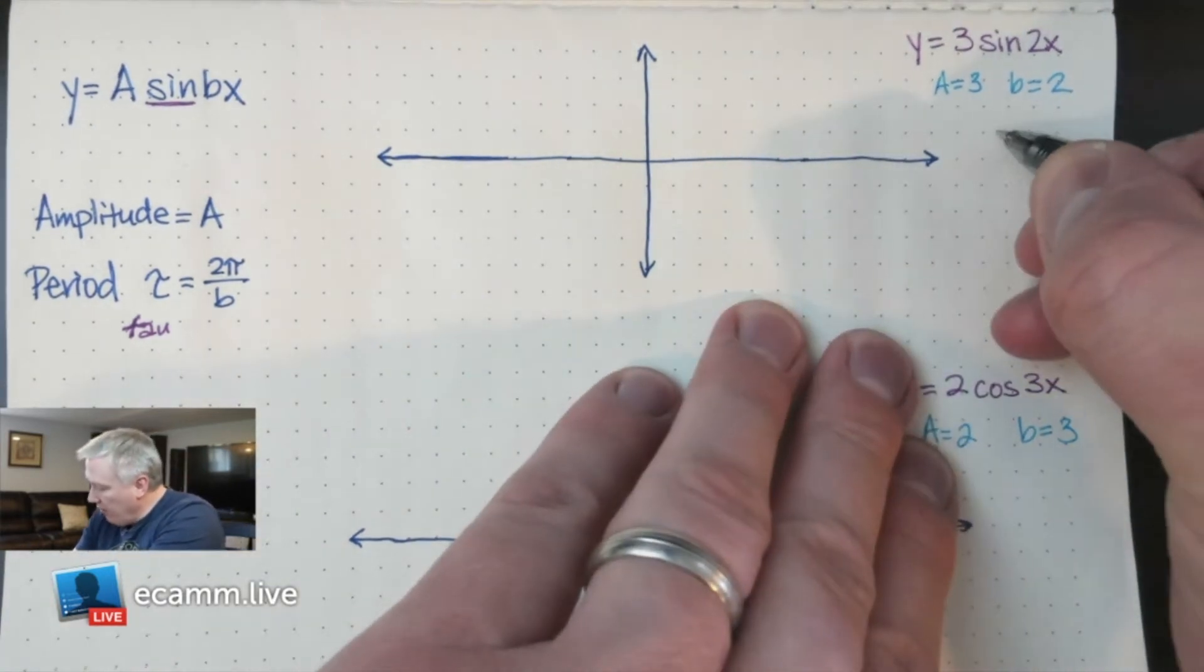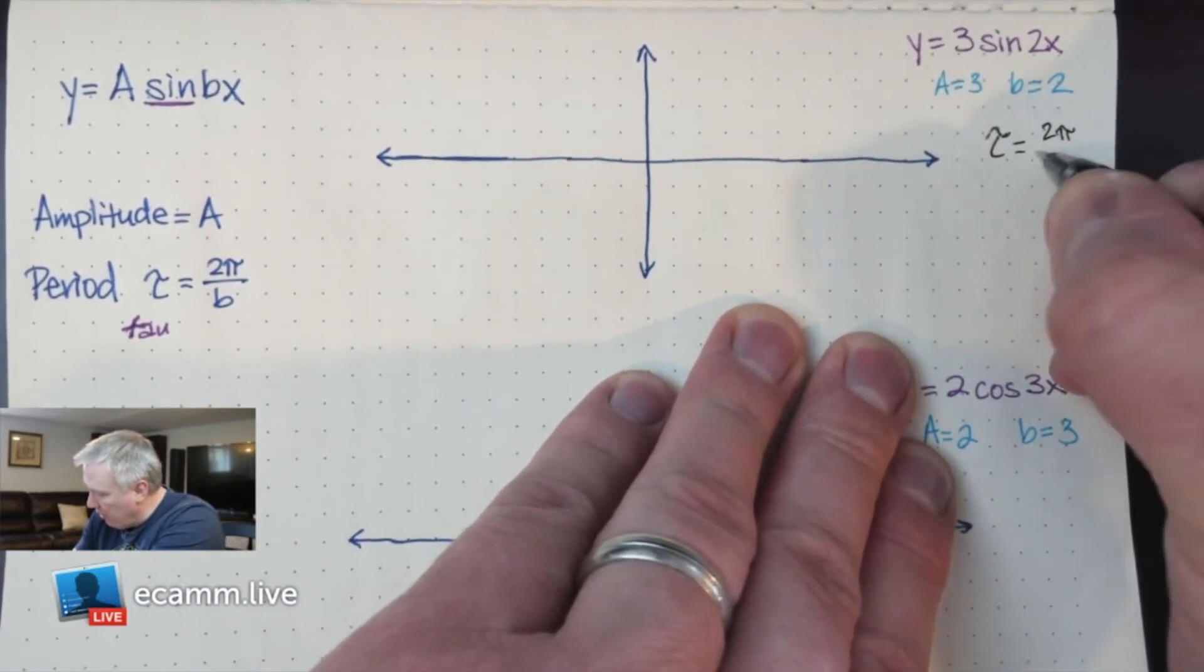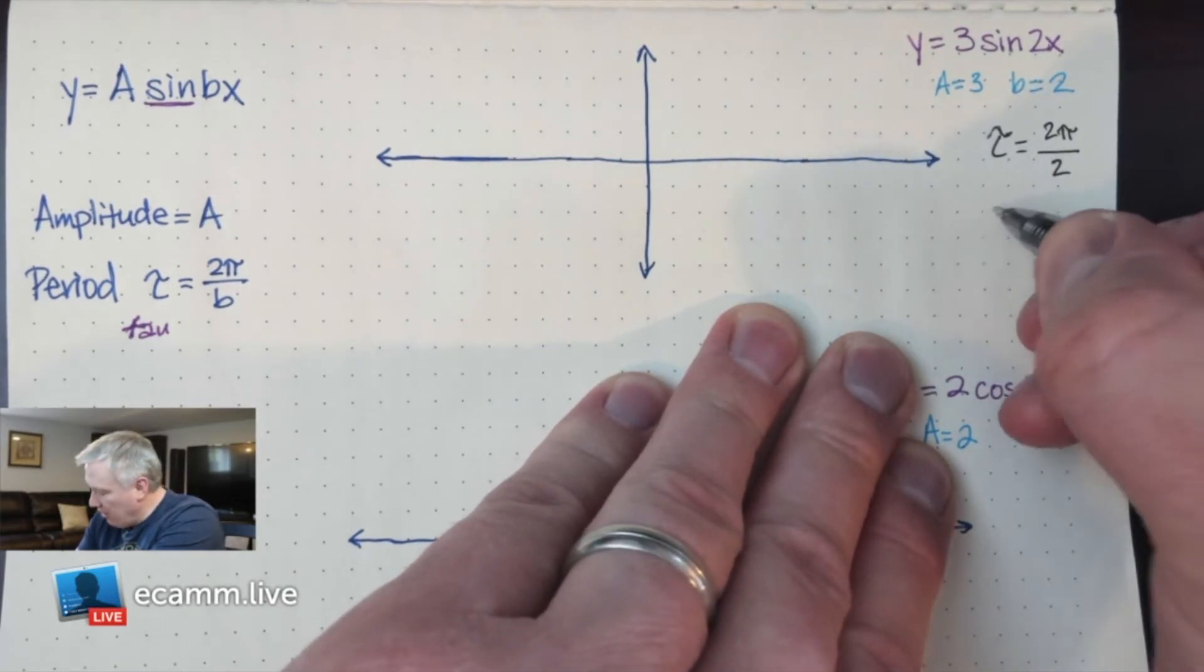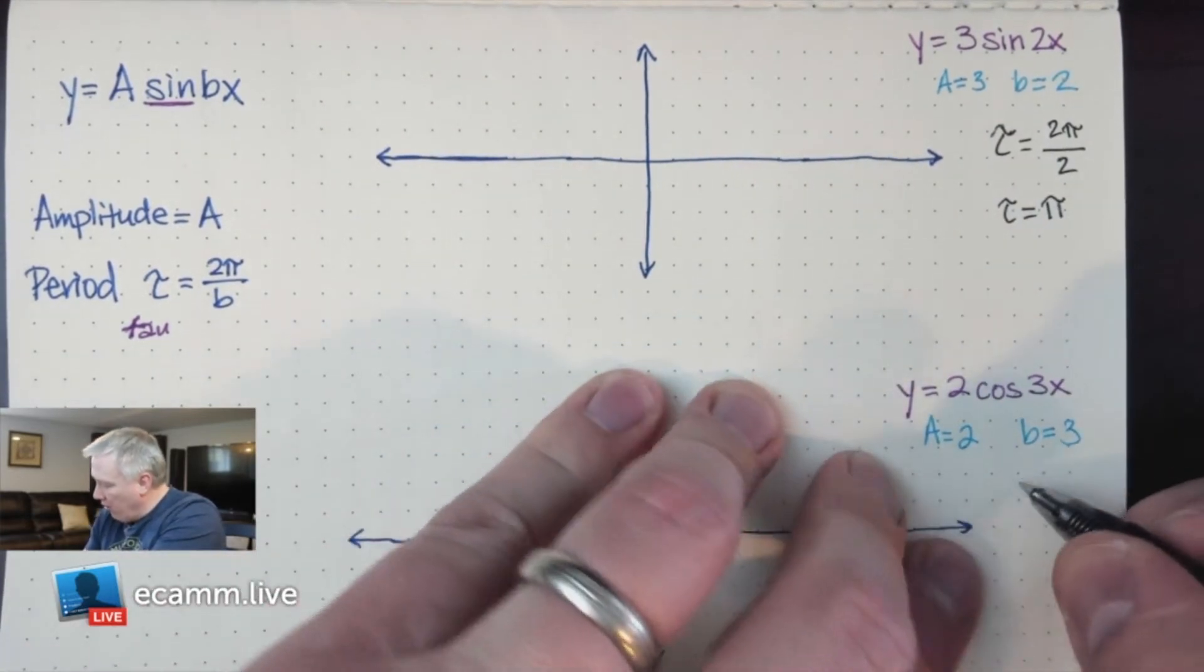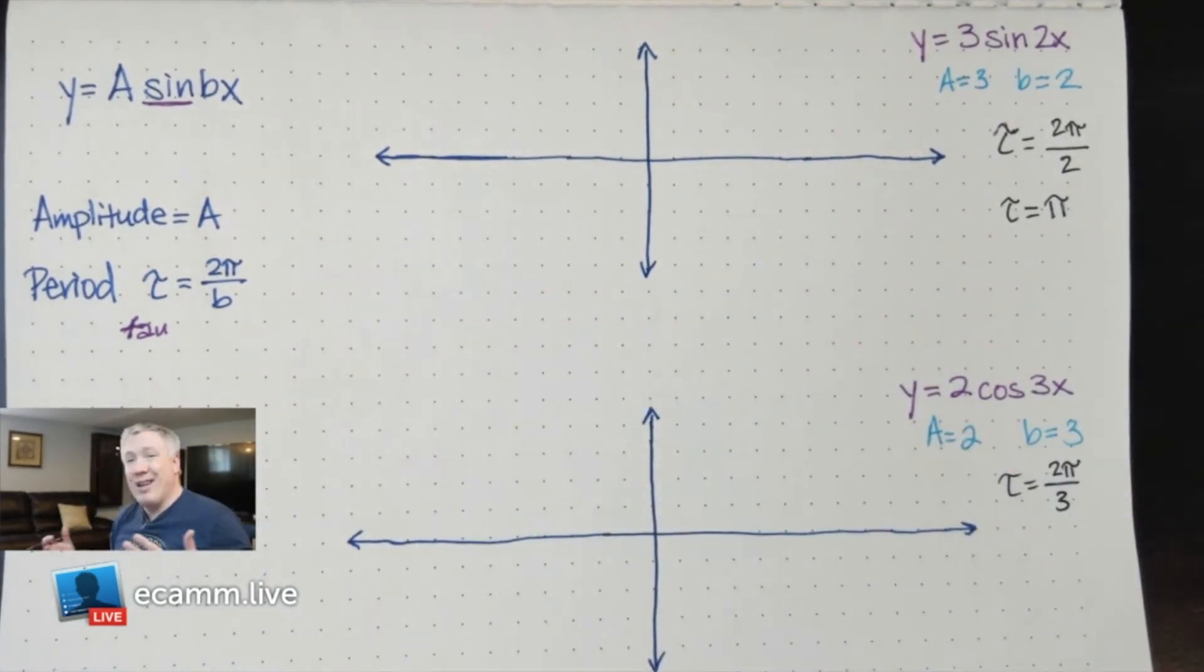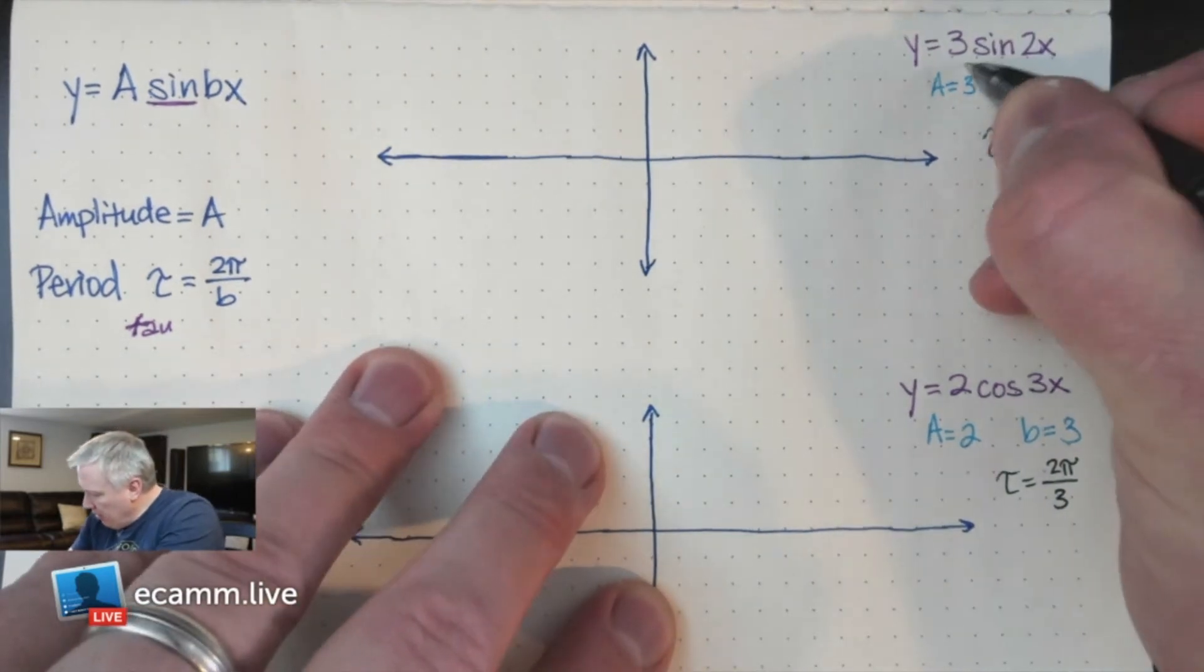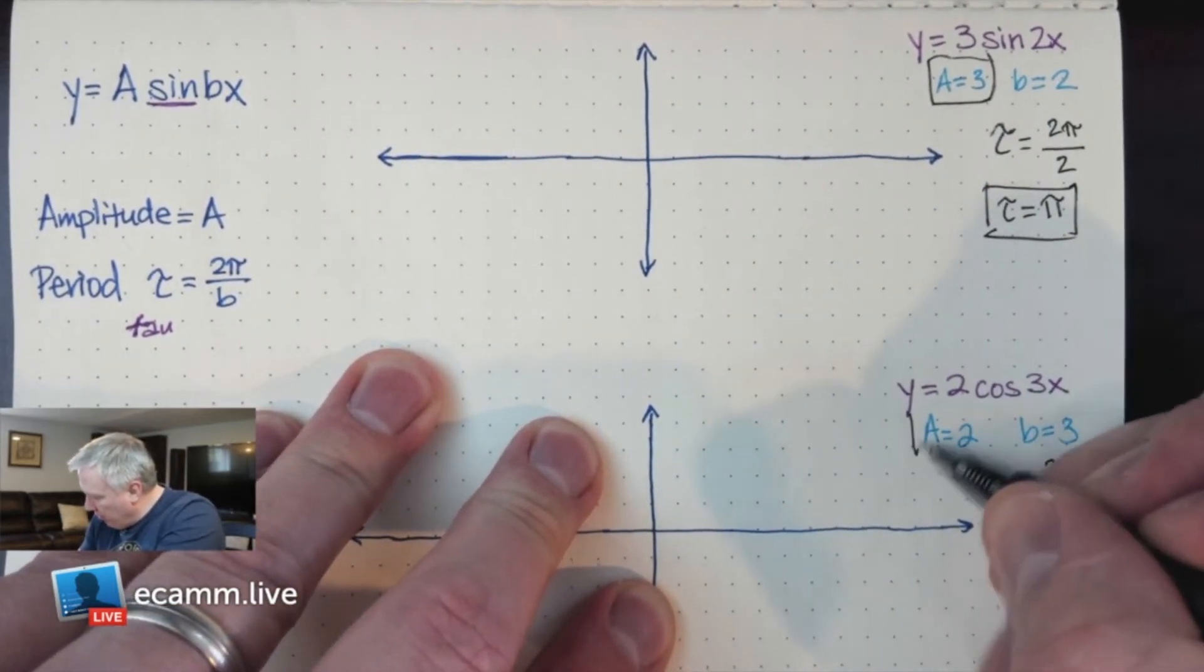If I plug in the formula, tau equals 2π divided by b. In this case, that's 2π divided by 2, which is just π. So tau is π. And over here, I have 2π divided by b, which is 3, so 2π divided by 3, and that doesn't reduce. I've got my amplitude and my period for both equations.